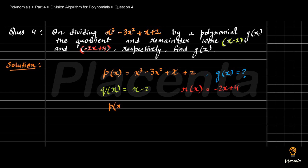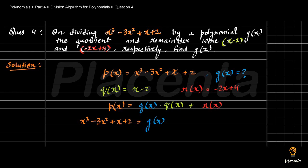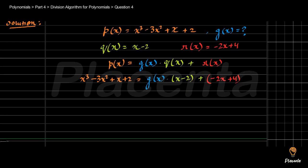We know that: dividend = divisor × quotient + remainder. Here, dividend is x cube minus 3x square plus x plus 2, which equals g(x) multiplied by (x minus 2), plus the remainder which is (minus 2x plus 4). Now we will shift the remainder to the left side, which will transform our equation.